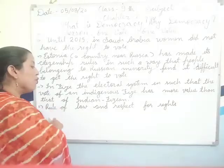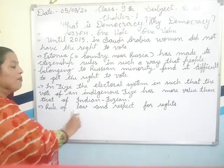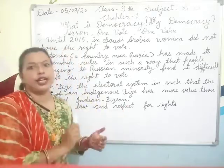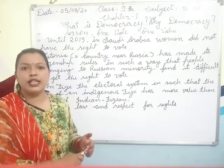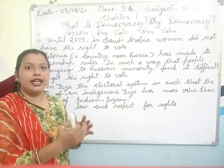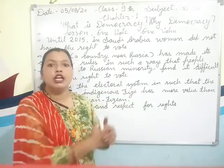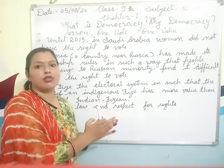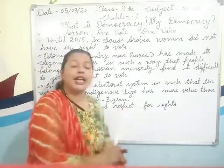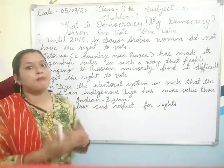The next point we will discuss is rule of law and respect for rights. Under this heading, we will discuss how the rule of law should work, and how laws should be respected. The law should govern according to what has been established — not that the ruling power itself becomes the law. In a democratic government, the law comes first. Respect for rights means that all rights that we have must be respected by everyone.